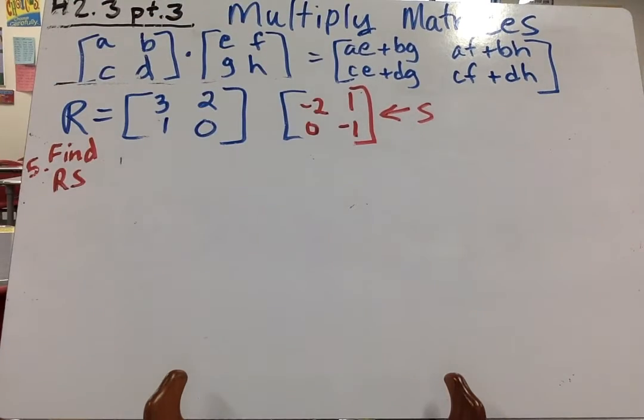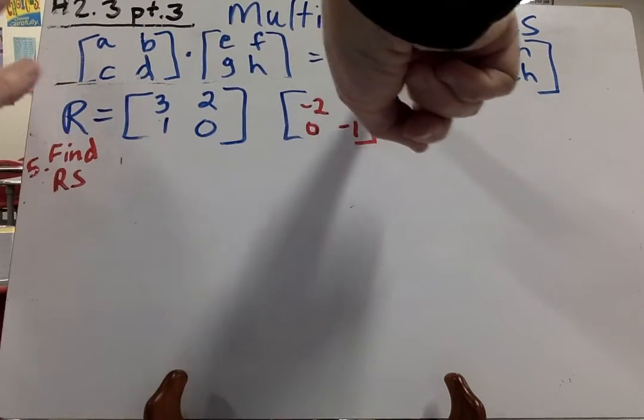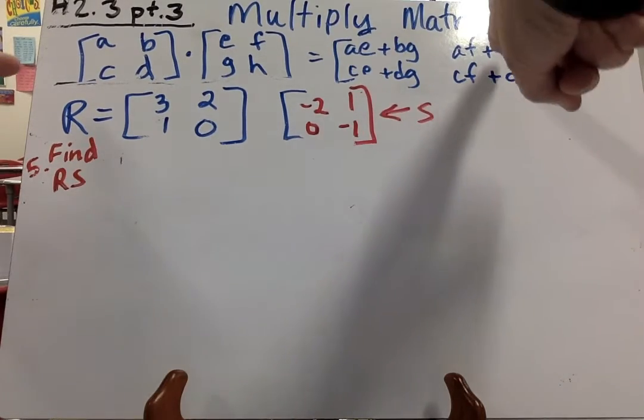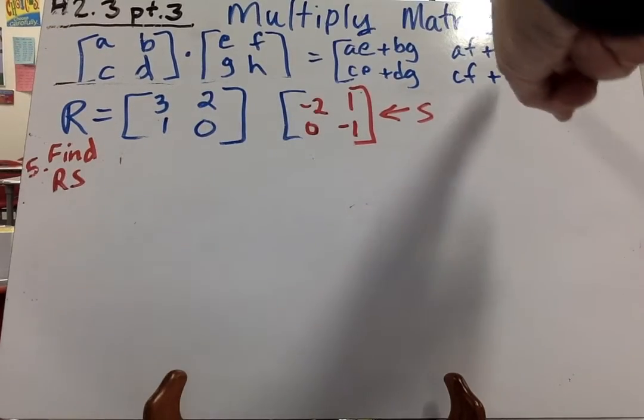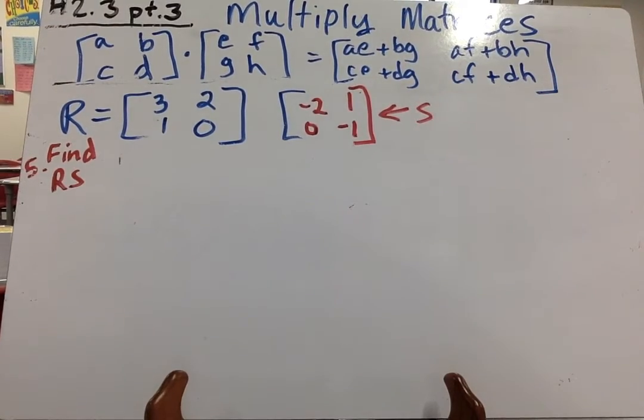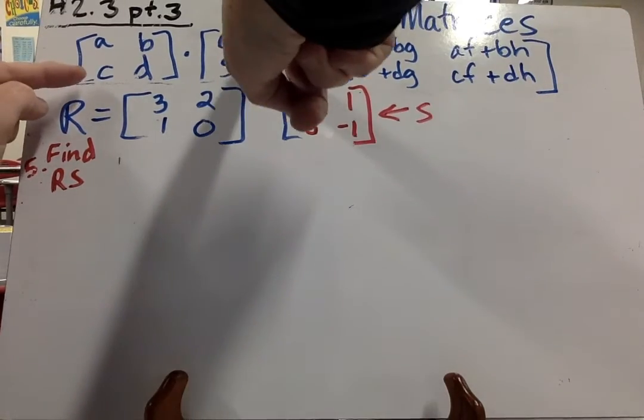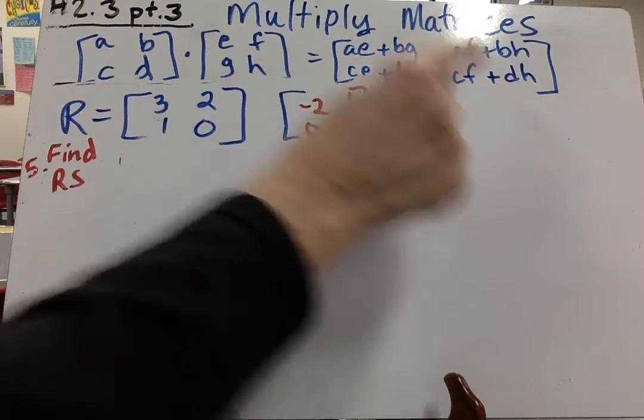Then we go CE plus DG, that's going to be our second one down here. Our third one over here goes AF plus BH, multiply first and then add those together. And then our last one will go CF plus DH, and we'll get that one there.